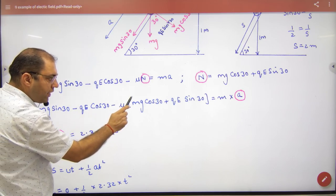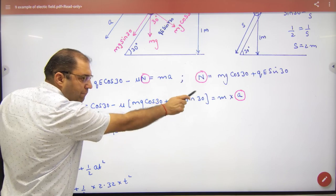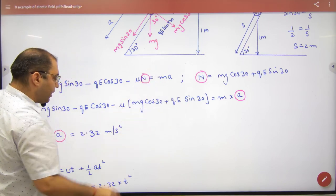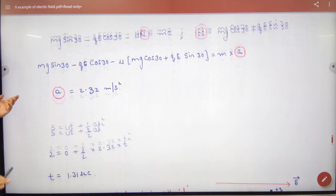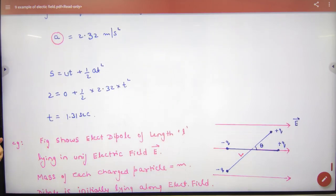mu is known, m is known, q is known, e is known, m is known. Put all values, what will come? a will come. So acceleration will come, then you will apply s is equal to ut plus half at squared.